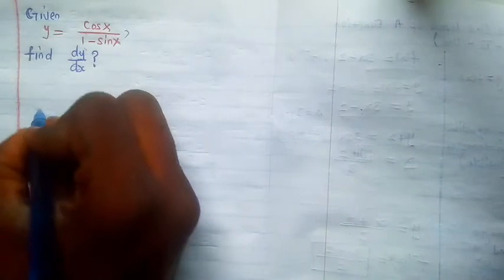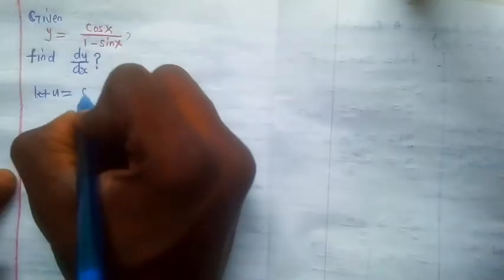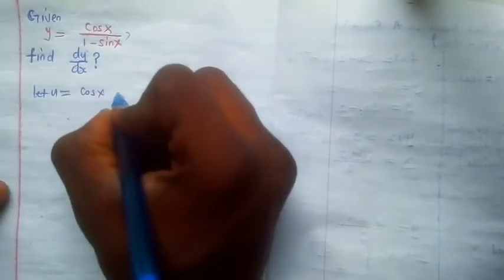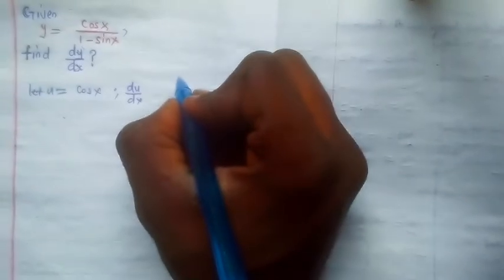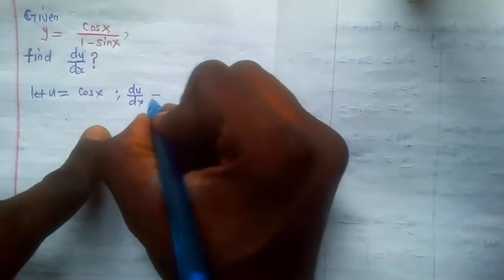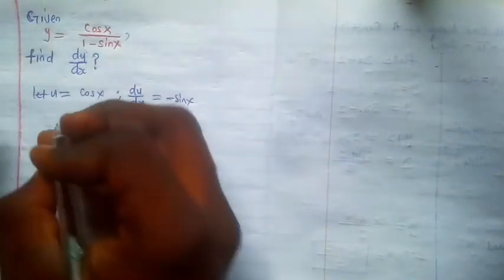We'll be doing this by substitution. Let u be equal to cosec x, so that du/dx will be equal to—if u equals cosec x, then du/dx will be negative sine x. So let's go on and substitute something else.